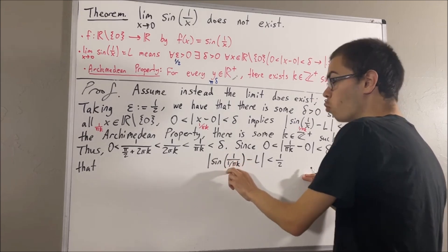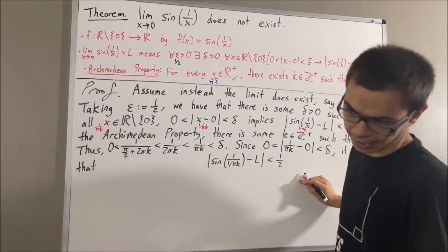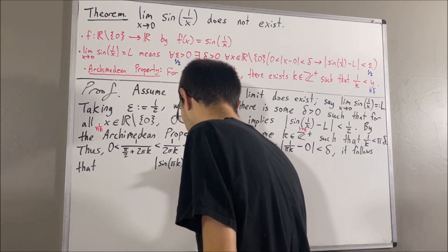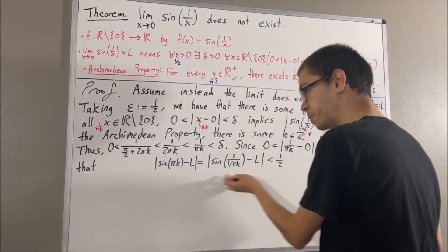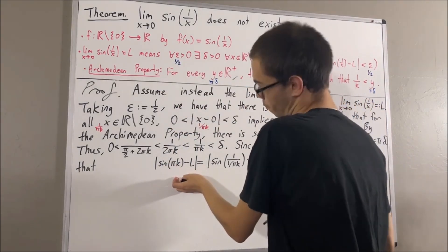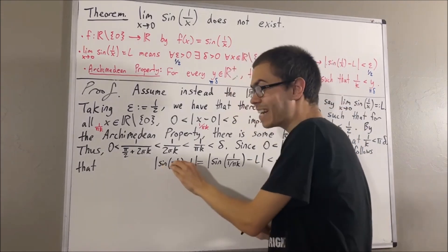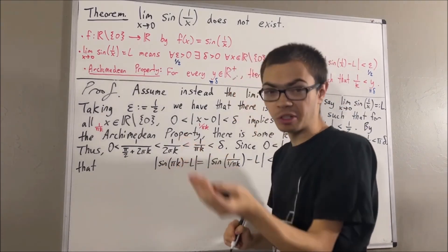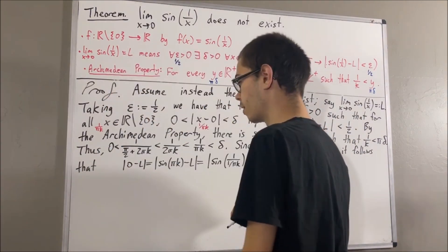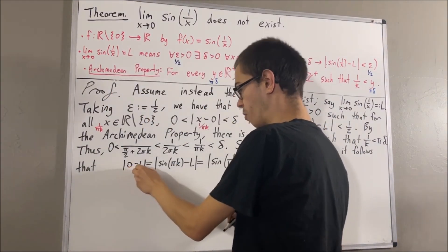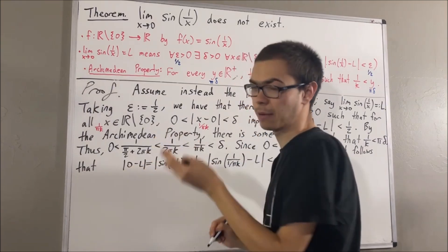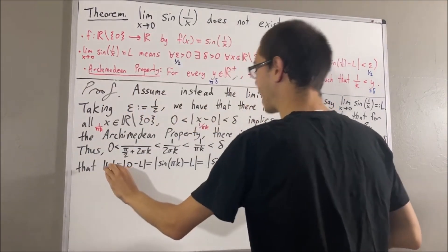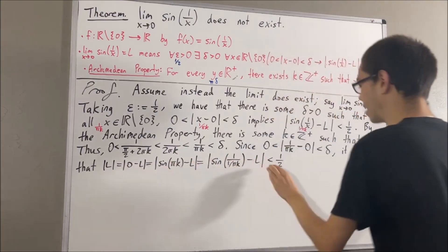Now, 1 over (1 over pi k) is just equal to pi k. The sine of any integer multiple of pi is equal to 0, and the absolute value of 0 minus L is just equal to the absolute value of L. So we have that the absolute value of L is less than one-half.